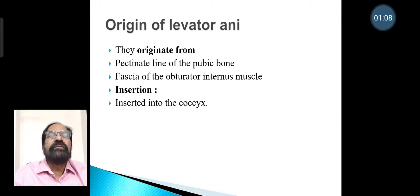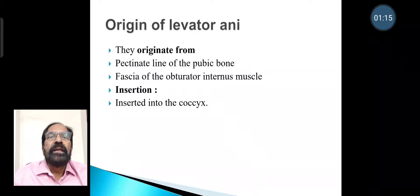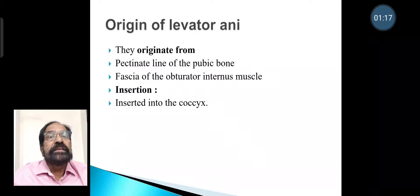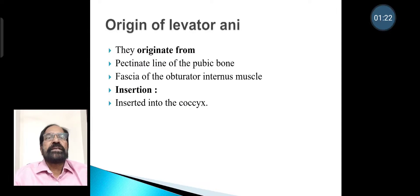Origin of levator ani: these muscles originate from the pectineal line of the pubic bone and the fascia of the obturator internus muscle, and are inserted into the coccyx.